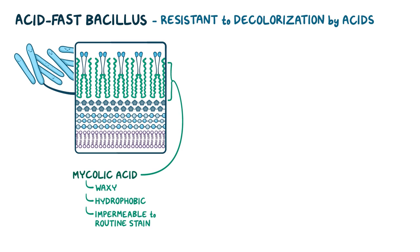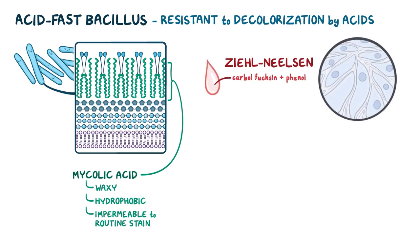So it needs special staining methods to be visualized, like Ziehl-Neelsen staining, which uses carbol fuchsin combined with phenol which is able to penetrate the waxy mycobacterial cell wall.